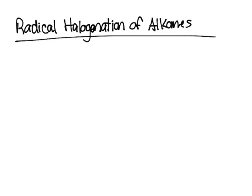In this video, I'm going to talk about the exact steps of radical halogenation of alkanes. As discussed in the previous video, you need heat or light to begin the reaction. We'll use CH4 and Cl2.